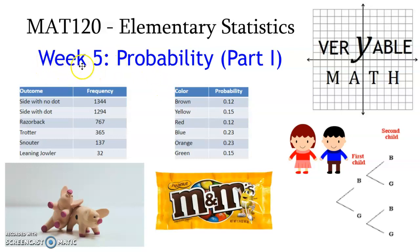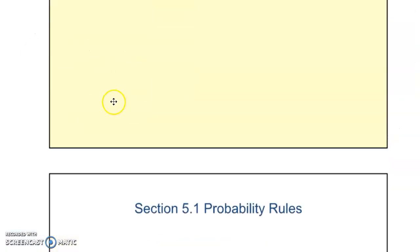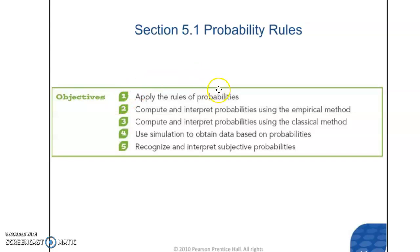Hello students, this video is for week 5 in the elementary statistics curriculum. We'll be talking about probability, and this is the first of a two-part video series about this lecture. We're going to be talking about pigs and M&Ms and boys and girls, but mostly we'll be talking about probability. The chapter covers all different types of ways of measuring probability and interpreting those probabilities using the empirical method, also known as the experimental method, and the classical method, also known as the theoretical method.